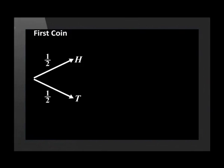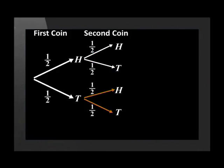So if the first coin came up heads, the next branches will represent the outcomes: heads with a probability of one-half, or tails with a probability of one-half. Similarly, if the first coin came up tails, the next branches will represent the outcomes: heads with a probability of one-half, or tails with a probability of one-half. Our tree diagram now shows all possible outcomes of tossing two coins.